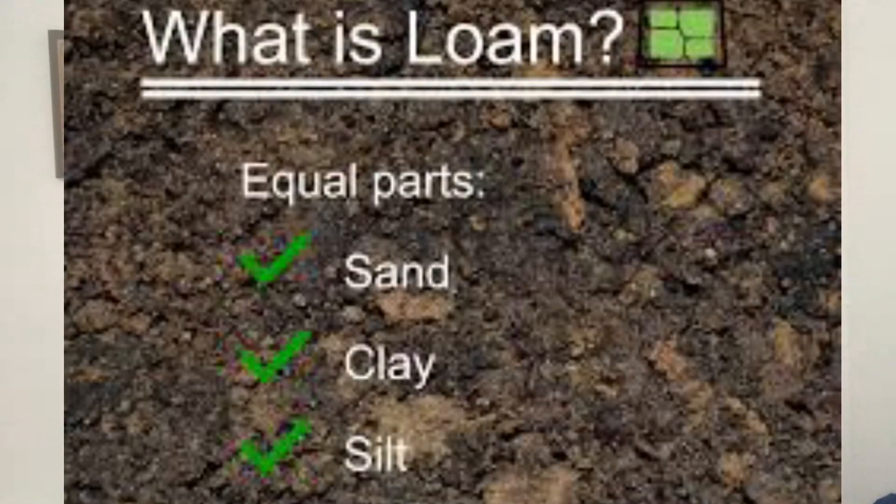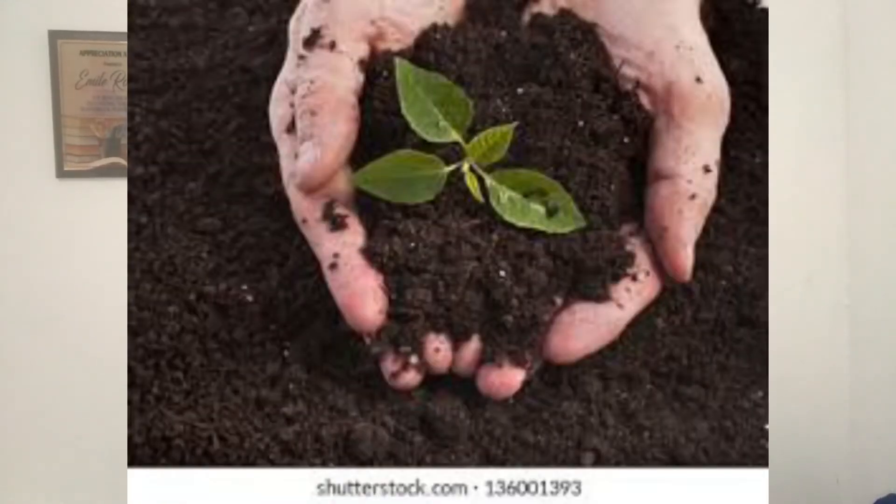Let us look at loam soil. Loam soil has the right amount of clay, sand and silt which makes it very good for plant growth. This is why it is nicknamed garden soil. Loam soil generally contains more nutrients and more humus than all other soil types.